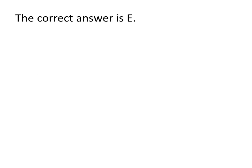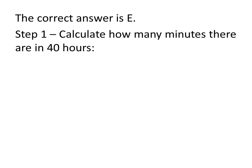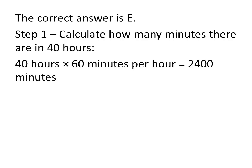The correct answer is E. We know there are 60 minutes in each hour, so multiplying 40 hours by 60 minutes an hour gives us 2,400 minutes in total.